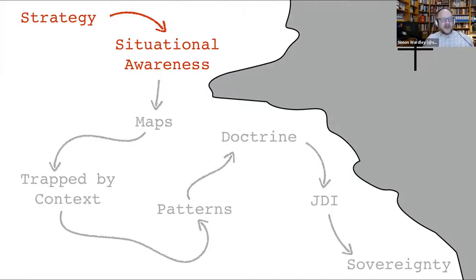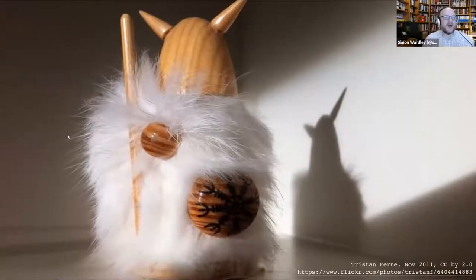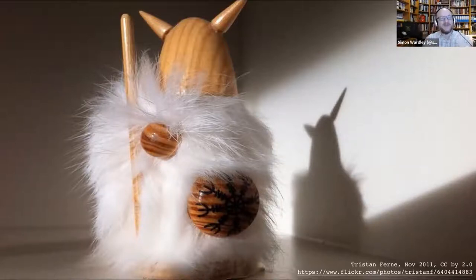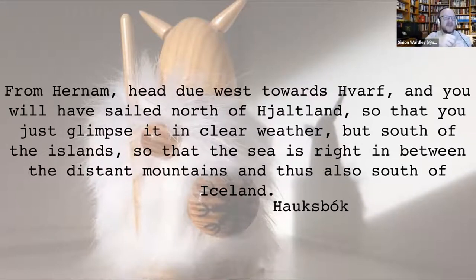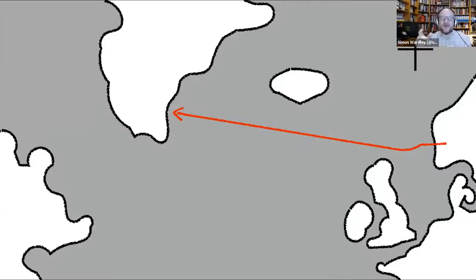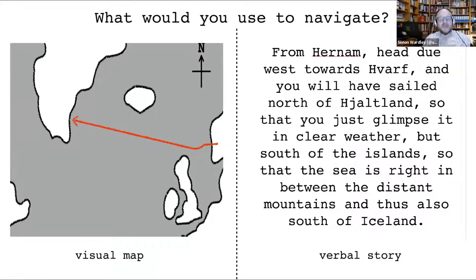This brought him to the subject of situational awareness. It's best explained with two examples. First: Vikings used to navigate through the aid of stories — epic stories learned over years describing routes like 'from Herman Head towards Halva you will have sailed north of Hatland.' This predated sunstone navigation charts. The question then becomes: would you use a visual map or a verbal story to navigate? For anything complex, the answer is clearly a visual map.